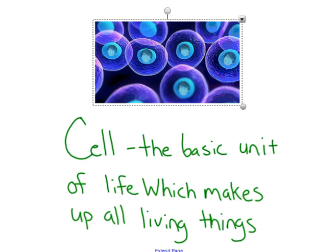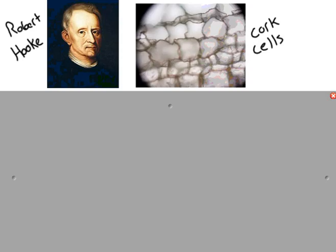A place that we would want to start is: who was the first person to discover what a cell looks like? This man's name was Robert Hooke. He was an English biologist and he first discovered what a cell looks like back in 1665, using a compound microscope just like we use in class.